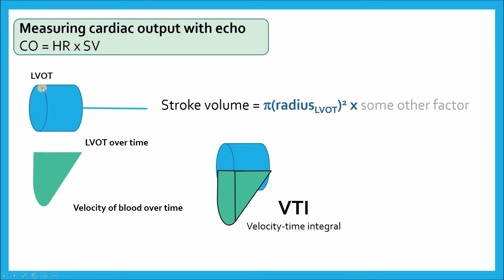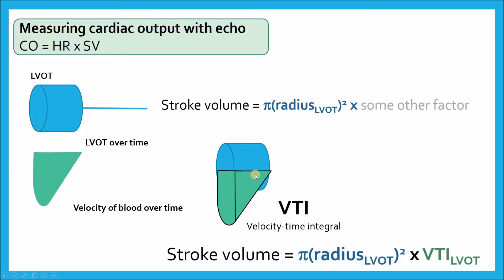So if I know the left ventricular outflow tract area — which is fixed over time — and I know what the velocity of blood going through that area is doing over time, I get what is called a velocity time integral. Stroke volume from echo is simply derived from the area of my LVOT, which is pi r squared, and then the velocity time integral through that LVOT. The area is an area over time, and if I can see what the velocity is through that area over time, I can infer the stroke volume by this equation.